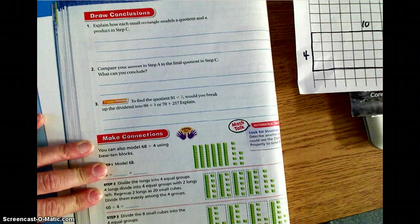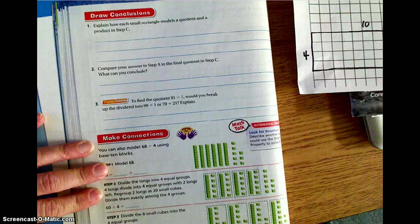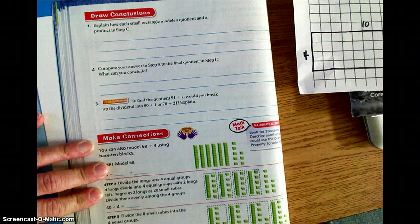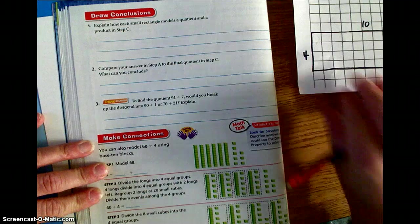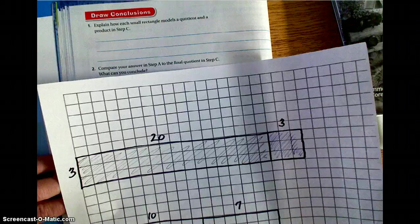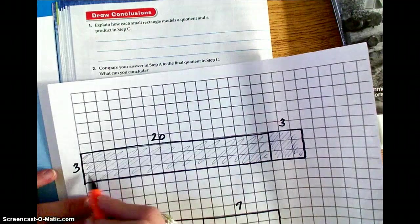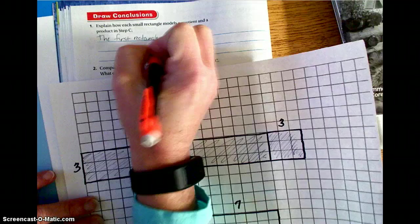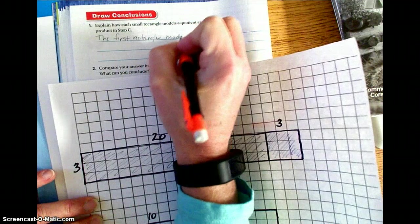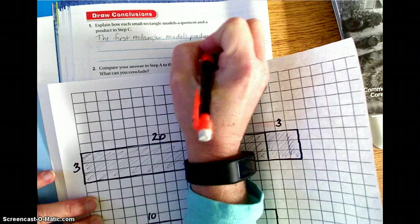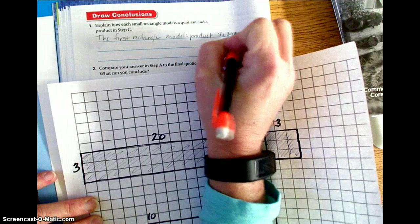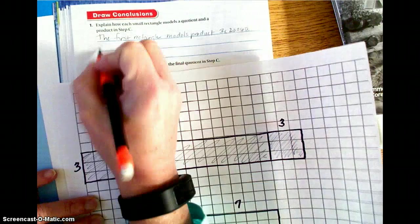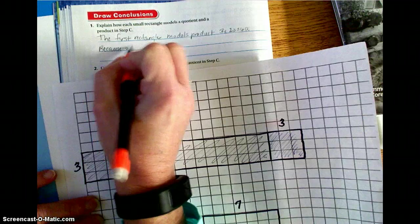On page 228, we have some conclusions to draw based on what we just did with our rectangles that we drew. It says, explain how each small rectangle models a quotient and a product in step C. Now, if we look at our model, I'm going to put it down here so that you guys can see it again as we're answering the questions. The first rectangle, so the first rectangle models the product 3 times 20 equals 60, period.